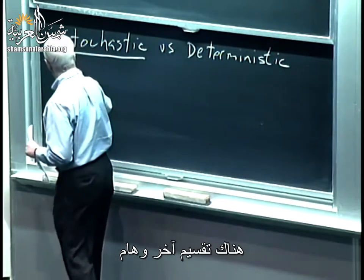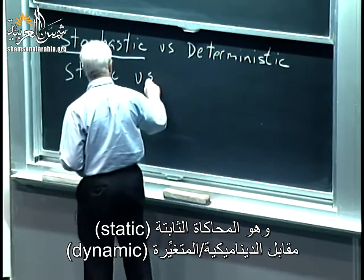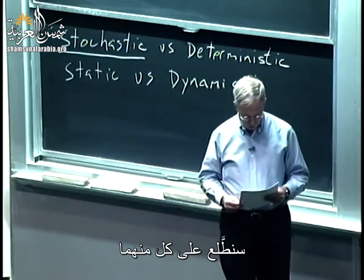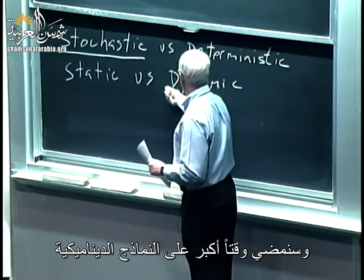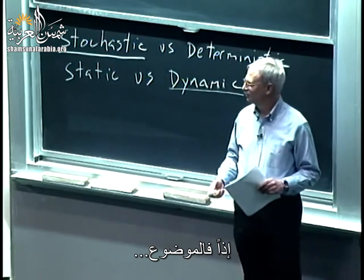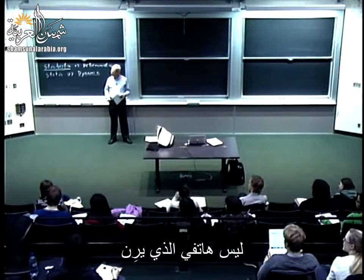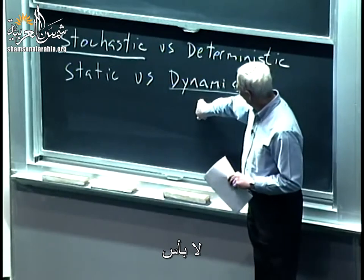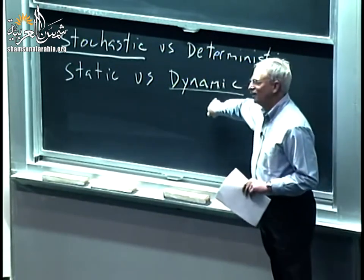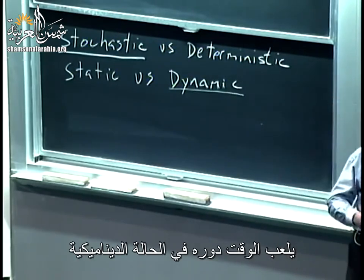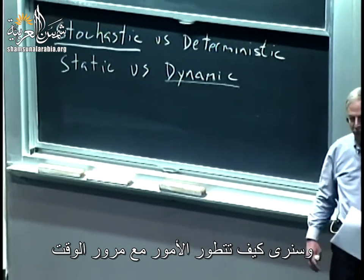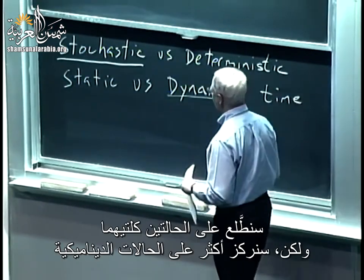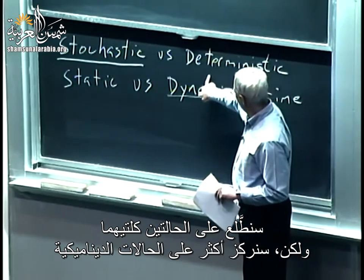Another interesting dichotomy is static versus dynamic. We'll look at both, but we'll spend more time on dynamic models. In a dynamic situation, time plays a role — you look at how things evolve over time. In a static simulation, there is no issue of time. We'll be focusing mostly on dynamic ones.